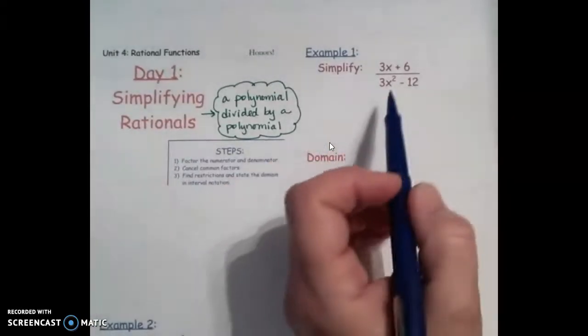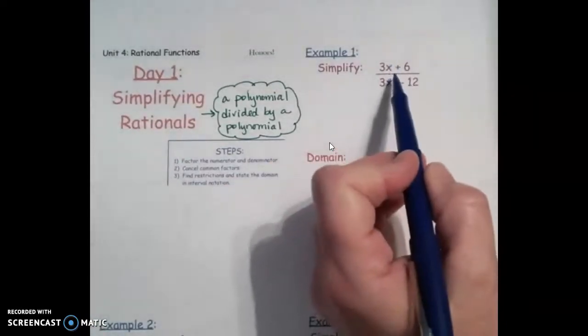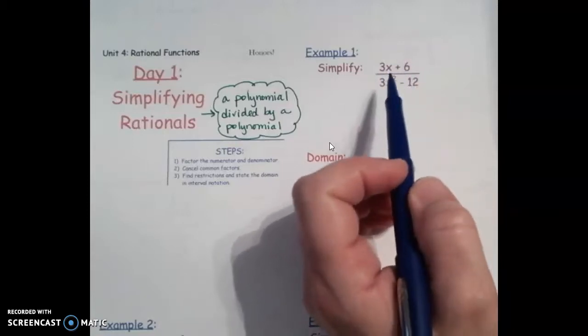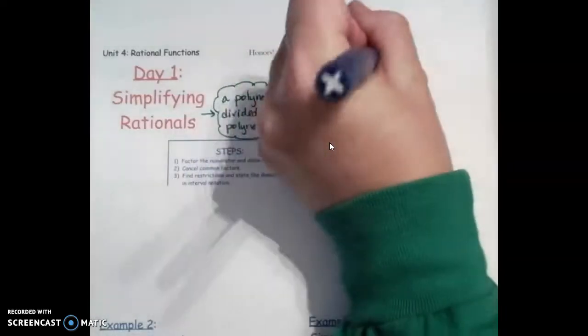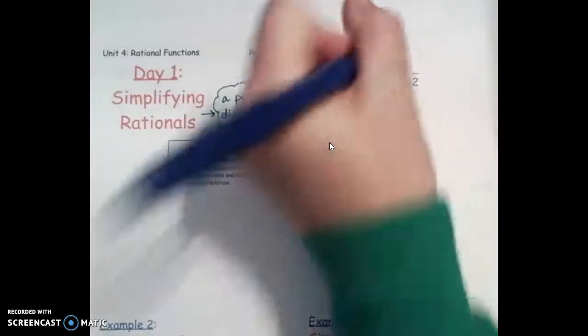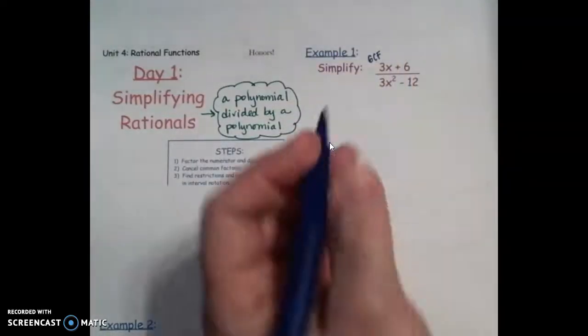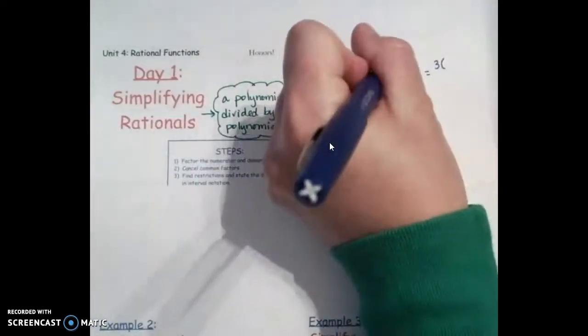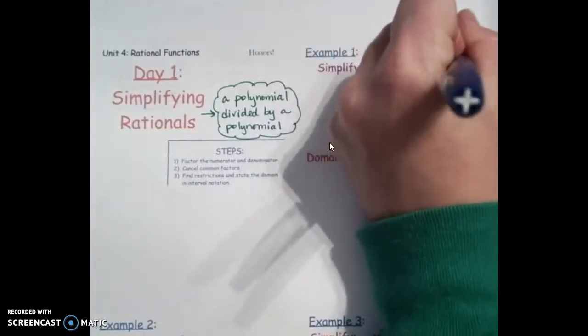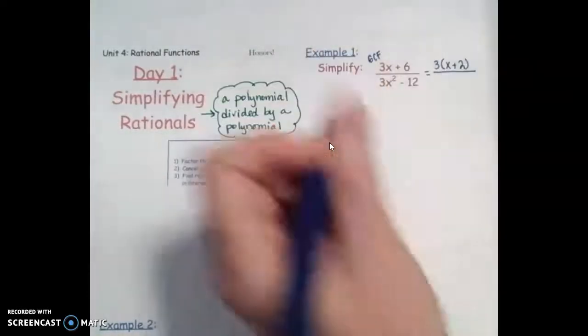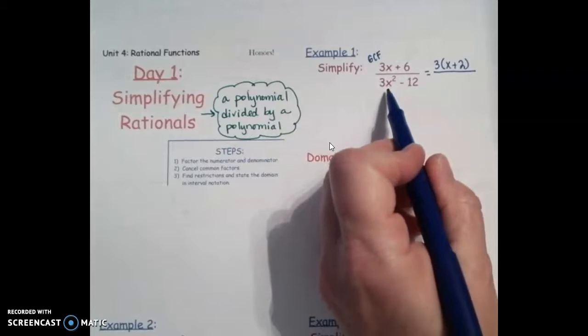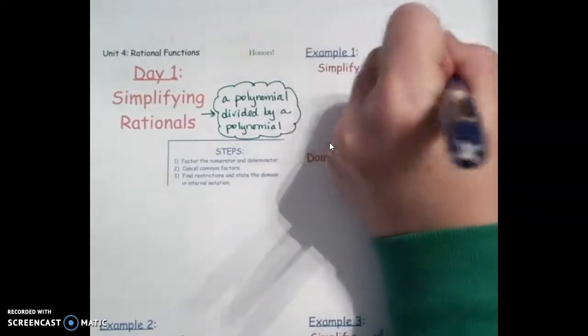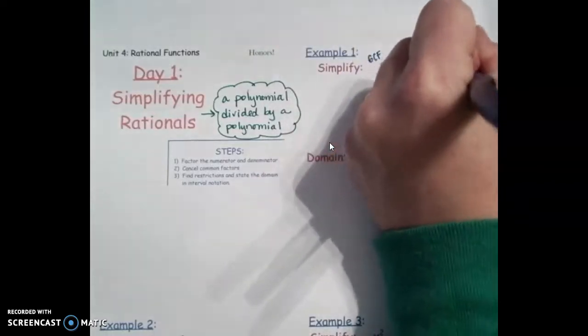If you look at Example 1, you can see that we need to factor the numerator. You always look for a GCF first. This does have a GCF, so we're going to factor out that 3. If I divide by 3, that's going to leave us with x plus 2. We also have a GCF in the denominator. When I factor out that 3, that's going to leave us x squared minus 4.